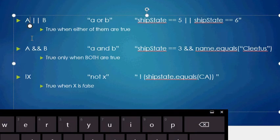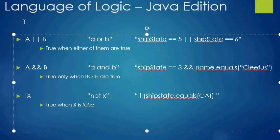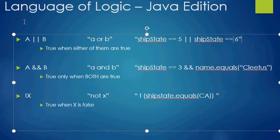Let's dig more deeply into OR, AND, and NOT. This is how you write OR in Java: A || B (A bar bar B). And how you read it in English: 'A or B.' An example of how this would look in Java is 'shipState == 5 || shipState == 6.' This whole highlighted expression is true when the variable shipState is either five or six — they both don't have to be true at the same time.